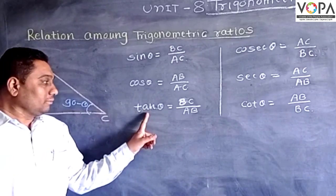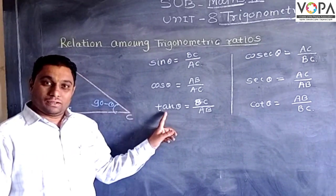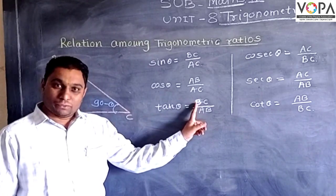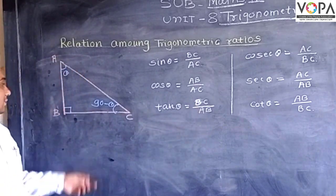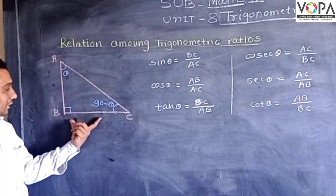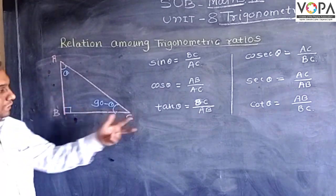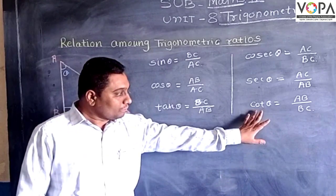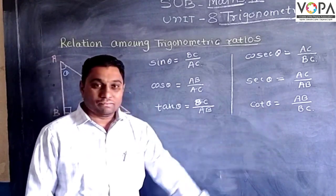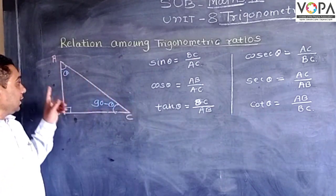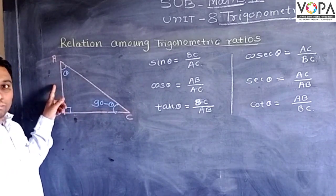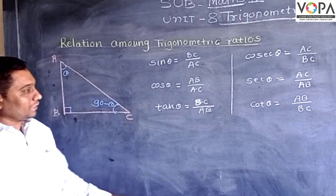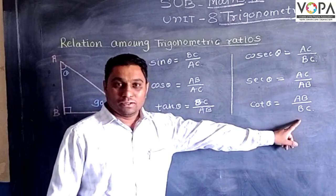Now the tangent ratio of theta is opposite side upon adjacent side, that is BC upon AB. And cot theta is adjacent side upon opposite side, that is AB upon BC.